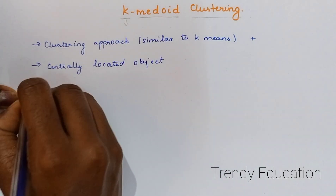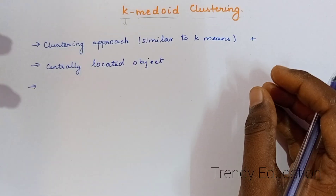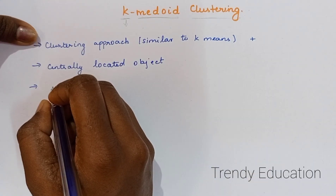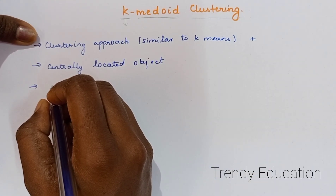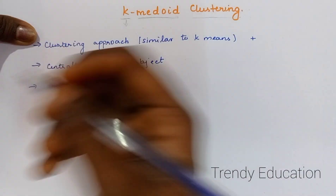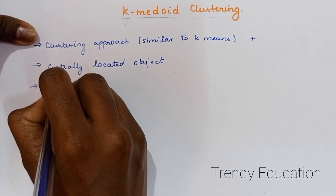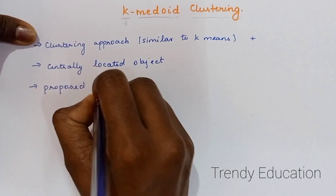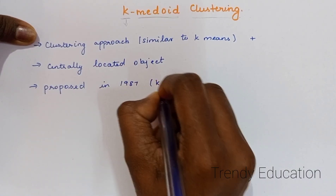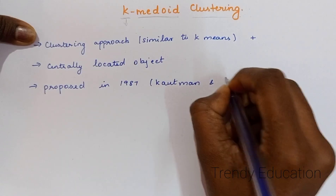K-Medoid clustering was proposed in 1987 by Kaufman and Rousseeuw. These are the two people who proposed the K-Medoid clustering algorithm.